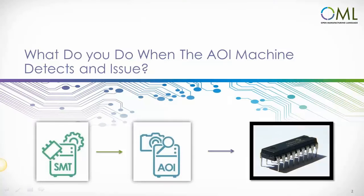One of the areas in the manufacturing process that can be improved is in automating the communication between the SMT and AOI machines. If everything was placed perfectly by the SMT machine, of course you have no problem.